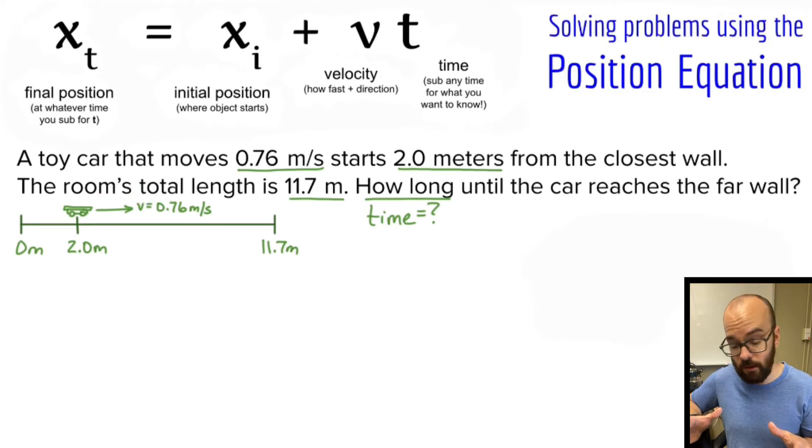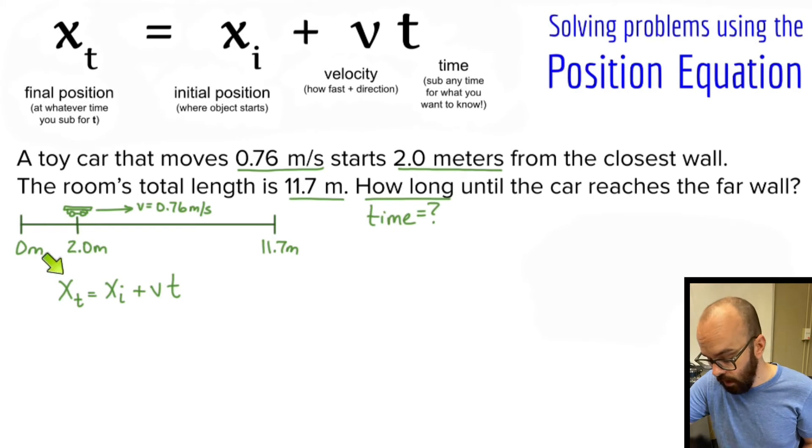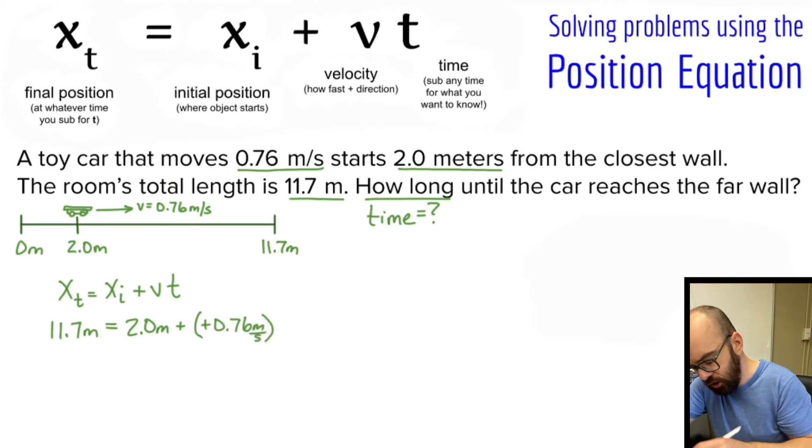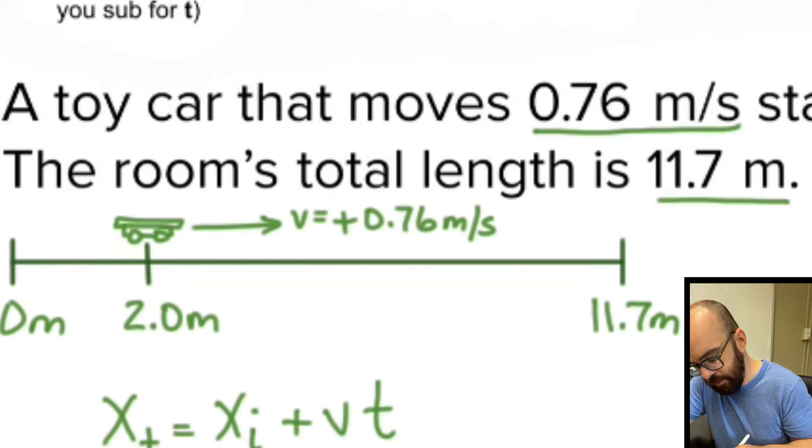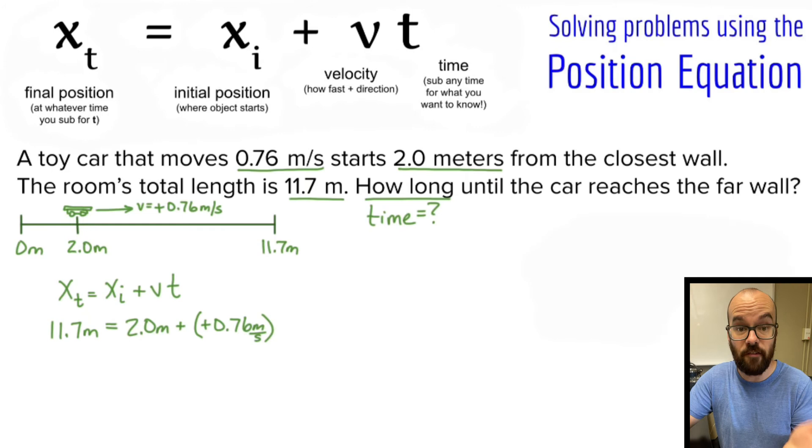Now that I can picture what's happening in the problem, let's write out our equation. We're going to substitute in values that we know. Our final position: well, we know what our final position is. I want to know how long until it reaches the far wall. The far wall is at a position of 11.7 meters. Equals our initial position - that's where our car is starting. Our car is starting at a position of 2.0 meters, so I'm going to substitute that in there. I know my car's velocity is 0.76 meters per second in the positive direction. And you know what, I'm going to add this in - I should have written a positive here. Positive 0.76 meters per second. Because velocity isn't just how fast it's moving, it's also which direction it's moving. So I need to include either a positive or a negative whenever I write my velocities. So velocity times my time. And I don't know how long this is going to take yet, so that's my variable.